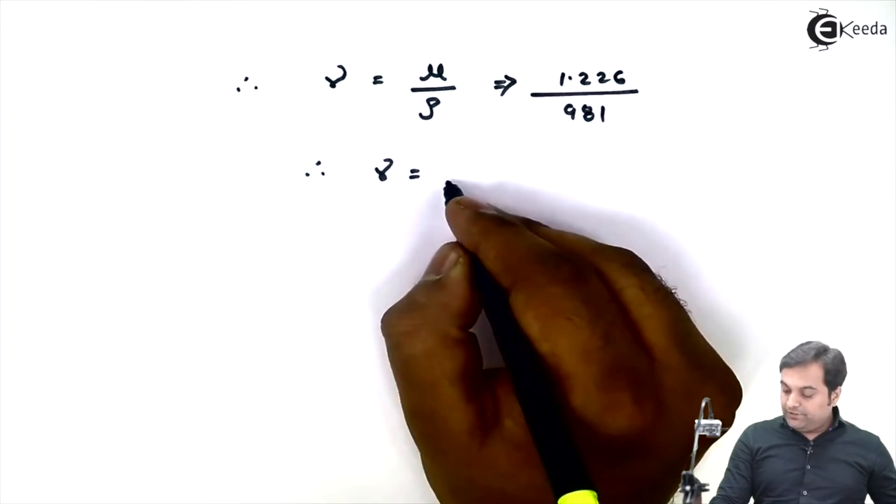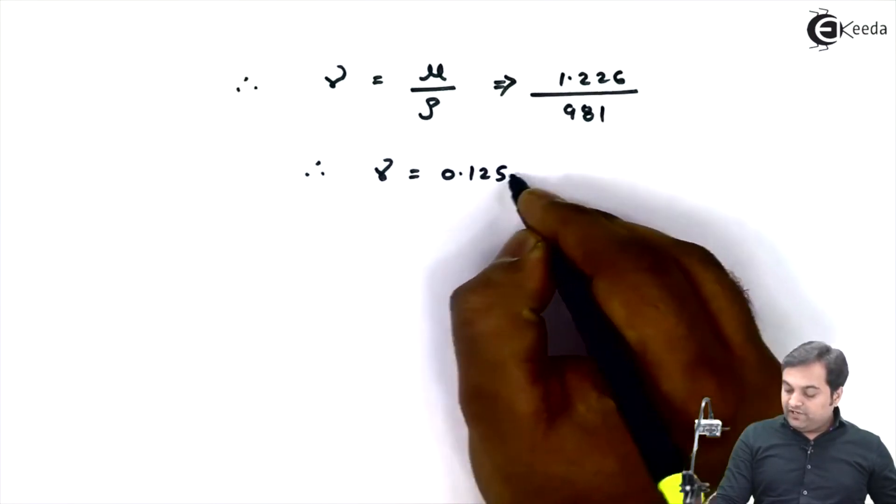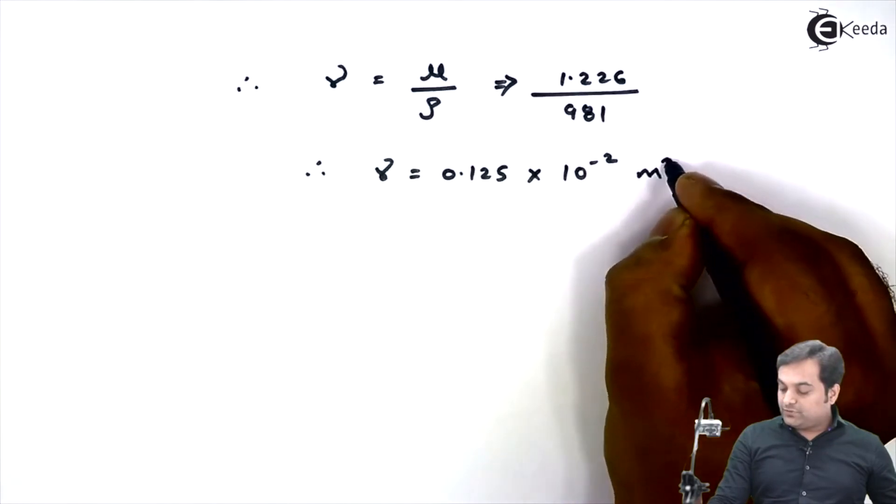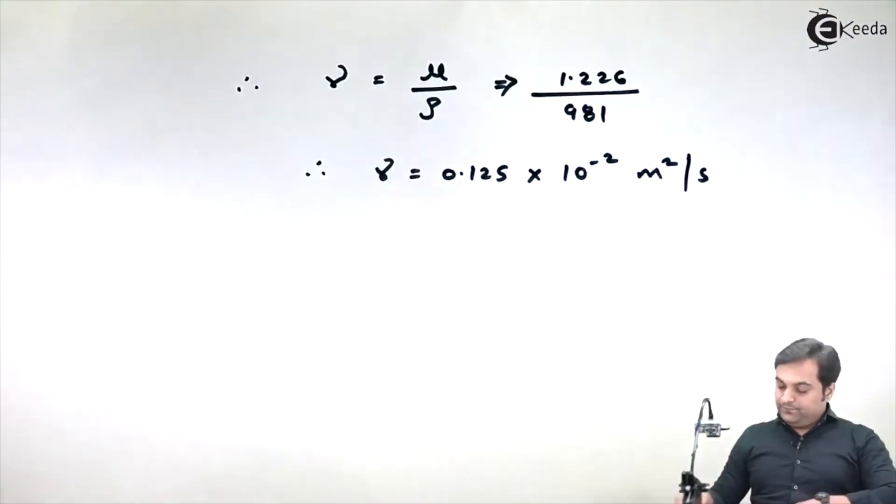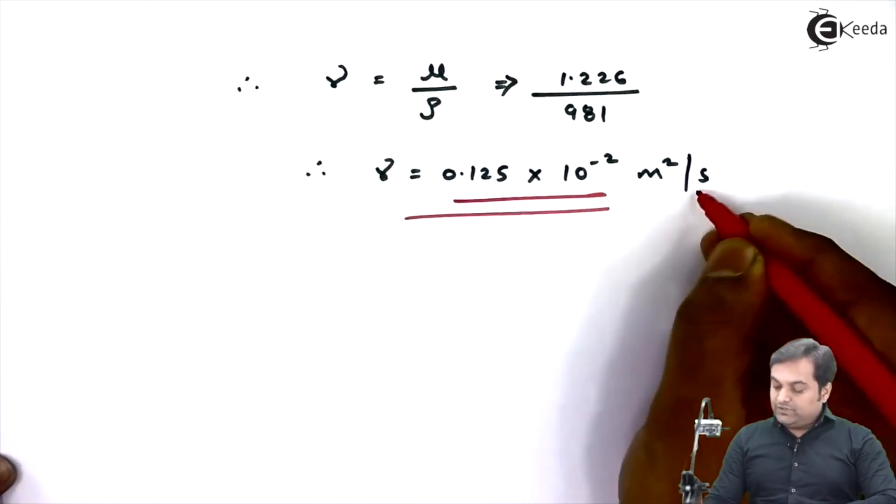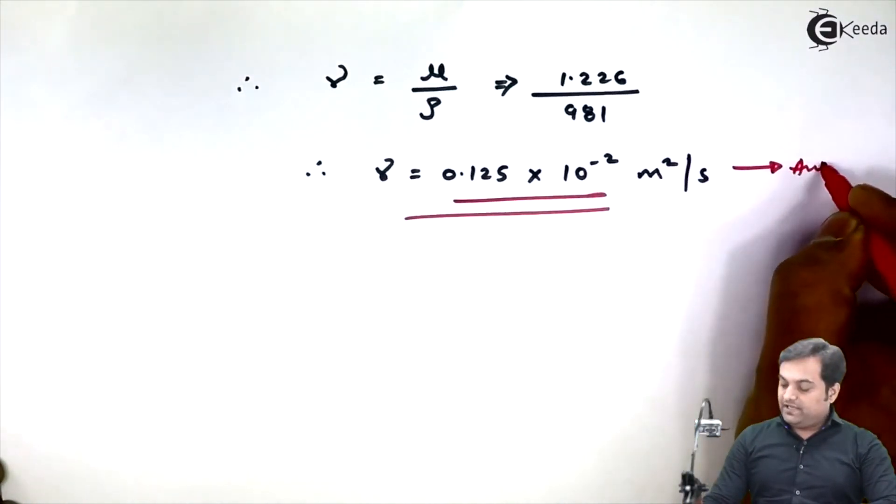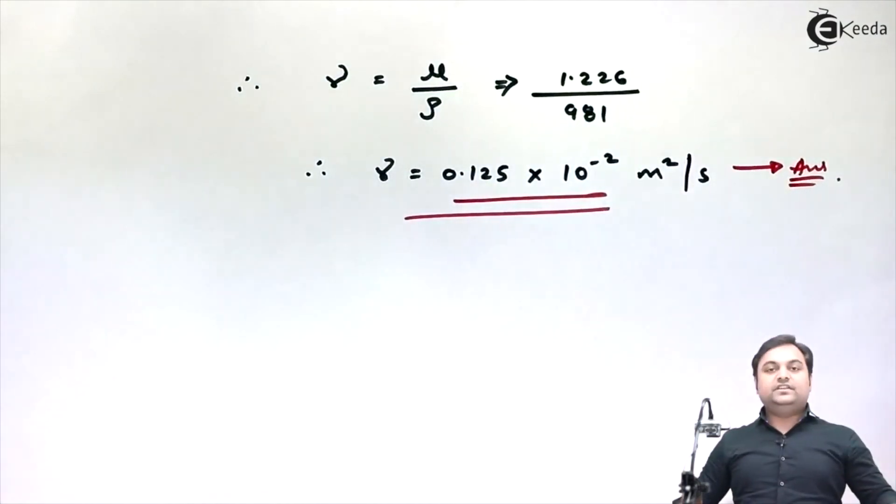From this I'll get my answer of nu which comes out to be 0.125 into 10 raise to minus 2 meter square per second. Meter square per second is the unit of kinematic viscosity and this is my answer. So as we see in this problem we have calculated the kinematic viscosity of oil which was asked and with this we complete the problem.